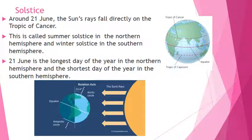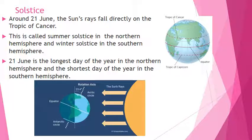Around 21st June, the sun's rays fall directly on the Tropic of Cancer. This is called summer solstice in the northern hemisphere and winter solstice in the southern hemisphere. 21st June is the longest day of the year in the northern hemisphere and the shortest day of the year in the southern hemisphere.